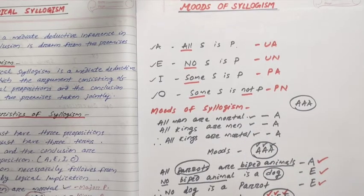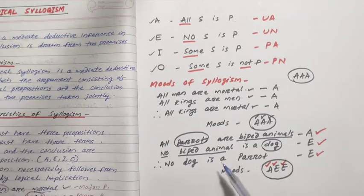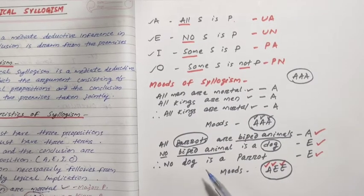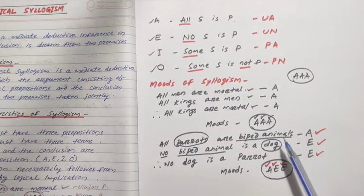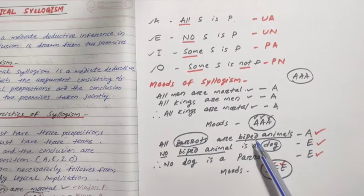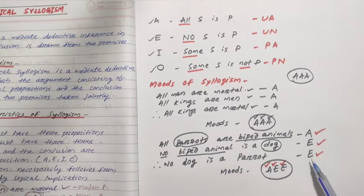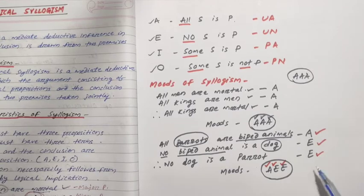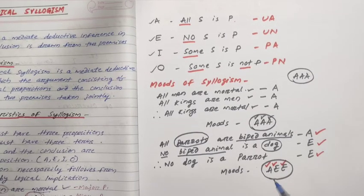In the second example, the mode is AEE — the first premise is the major premise, the second is the minor premise, and the third is the conclusion. The mode is determined by the quality and quantity of the given propositions.